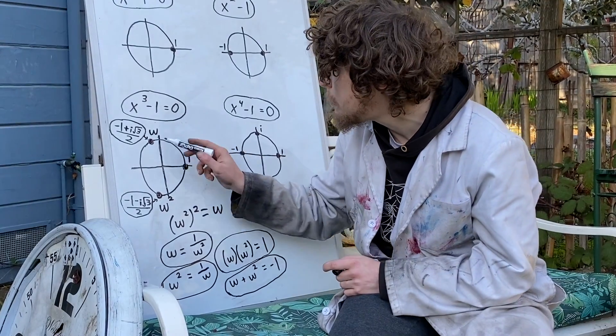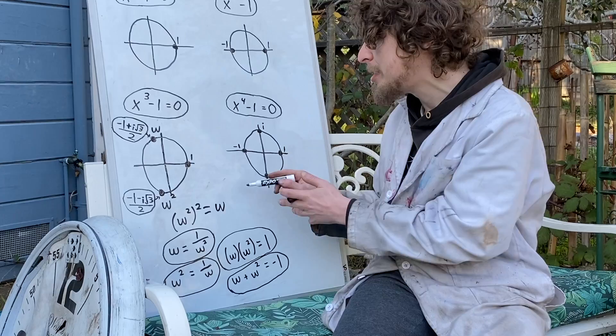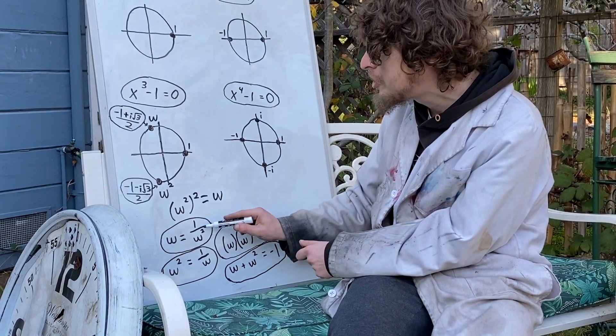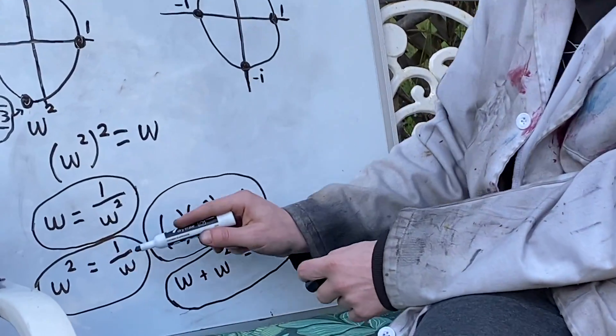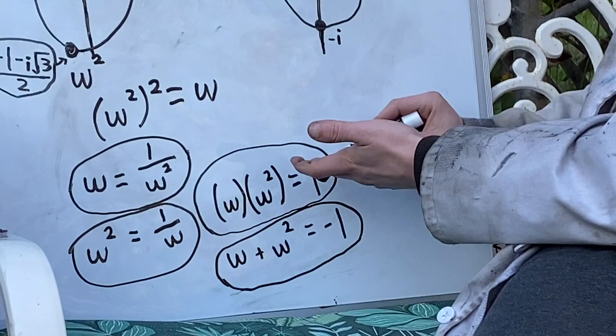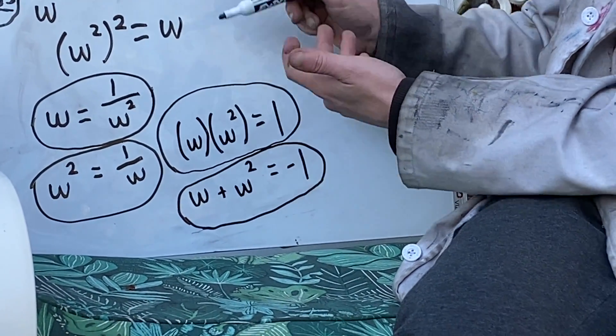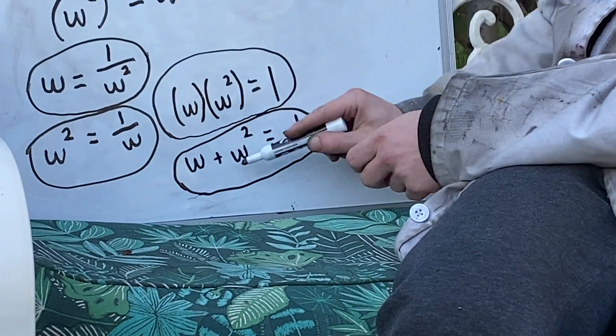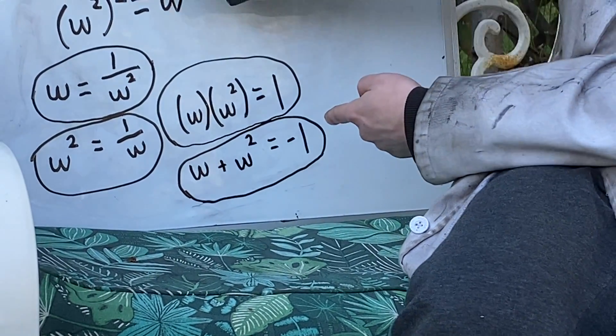Not only are these two points each other's square root, they're also each other's reciprocal, meaning one divided by each other. And if you multiply the two together, we get one, because that ends up with Omega cubed, and they're the cube roots of one. And if we add them together, we end up with negative one.